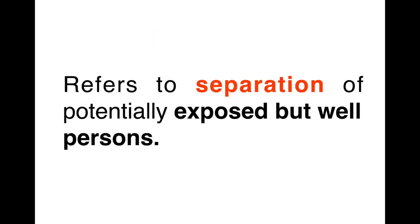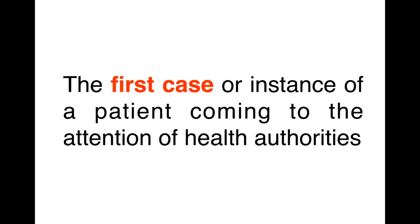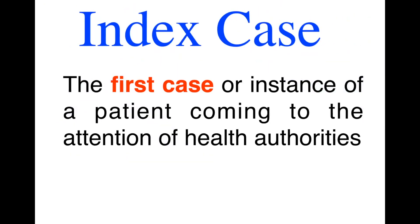Quarantine refers to the separation of potentially exposed but well persons. It is very common to interchange isolation and quarantine: isolation is for infected persons (the sick), while quarantine is for potentially exposed but well persons. The index case is the first case or instance of a patient coming to the attention of health authorities.